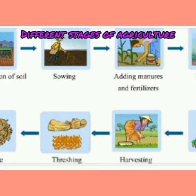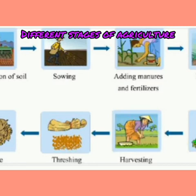Then, harvesting: harvesting is the cutting and gathering of the ripe crop. Rabi crops are harvested in March. Kharif crops are harvested at the end of the monsoon season. Then, storage: the harvested crop needs to be stored properly. Proper storage prevents damage to the crop from moisture and pests.